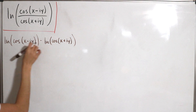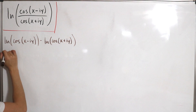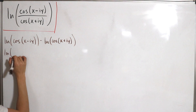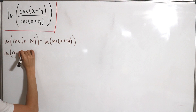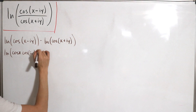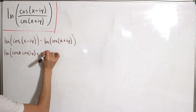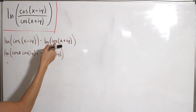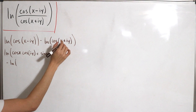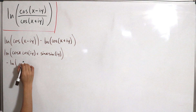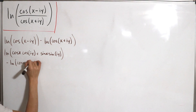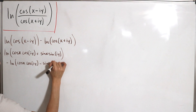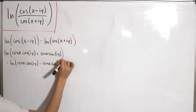Because we have sums and differences in the inputs, we'll use the cosine addition and subtraction identities. The difference gives us: cos(x)·cos(iy) plus sin(x)·sin(iy). The sum gives us: cos(x)·cos(iy) minus sin(x)·sin(iy).